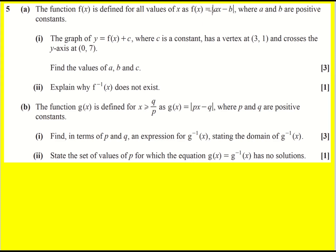Given the modulus function f(x) equals |ax - b| where a and b are positive constants, and the graph of y equals f(x) plus c, where we're applying a transformation to the original, has a vertex at (3, 1) and crosses the y-axis at (0, 7). We're asked to find a, b, and c. I think it's time to get a sketch down.